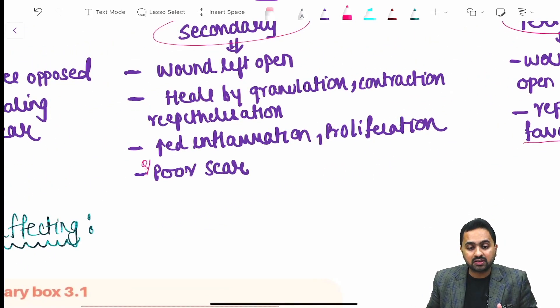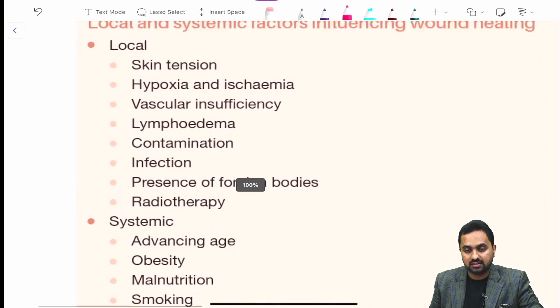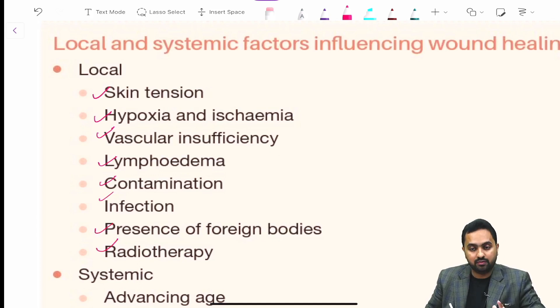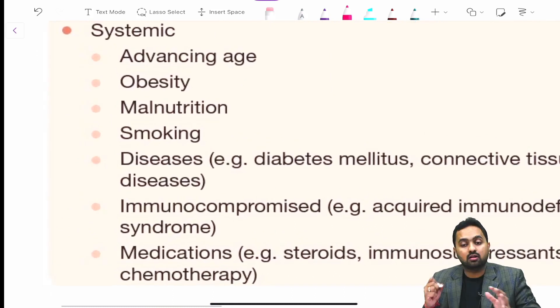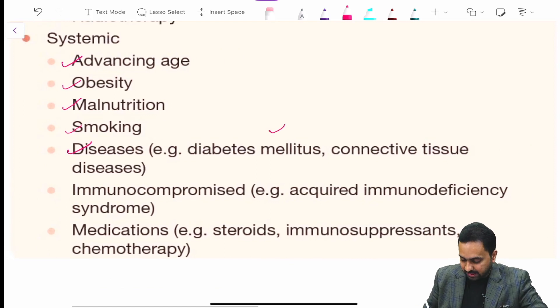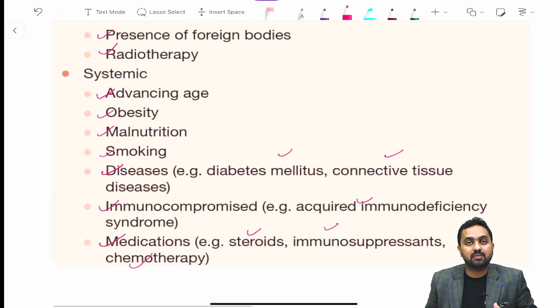Speaking of this the factors that affect your wound healing. I have taken this table from your Bailey and Love. It could be your local factors and your systemic factor. The local factors include skin tension, hypoxia and ischemia, vascular insufficiency, lymphedema, contamination, presence of infection, foreign bodies and radiotherapy. Your systemic factors include advancing age, obesity, malnutrition, smoking, then your diseases like diabetes mellitus and connective tissue, immunocompromised conditions like AIDS and your medications like steroids and immunosuppressants and chemotherapy. This was some of the important concepts with respect to your wound healing. Thank you.